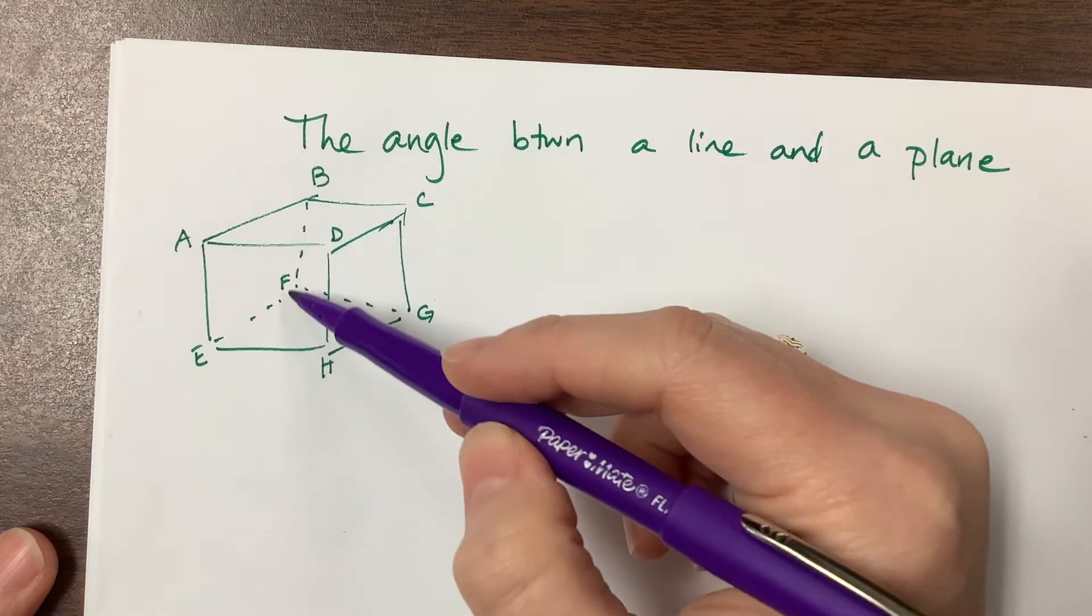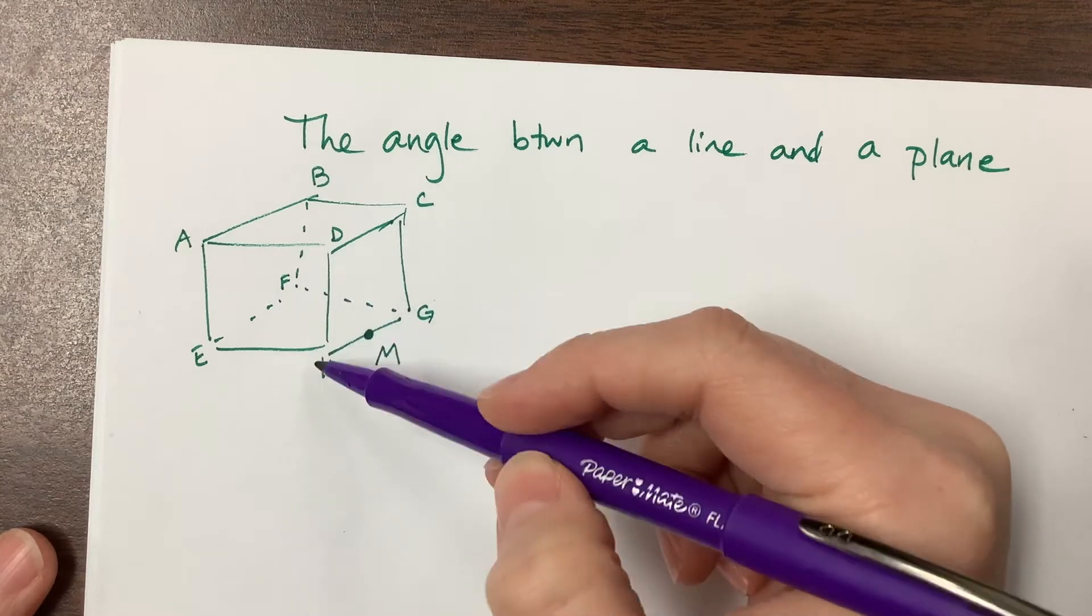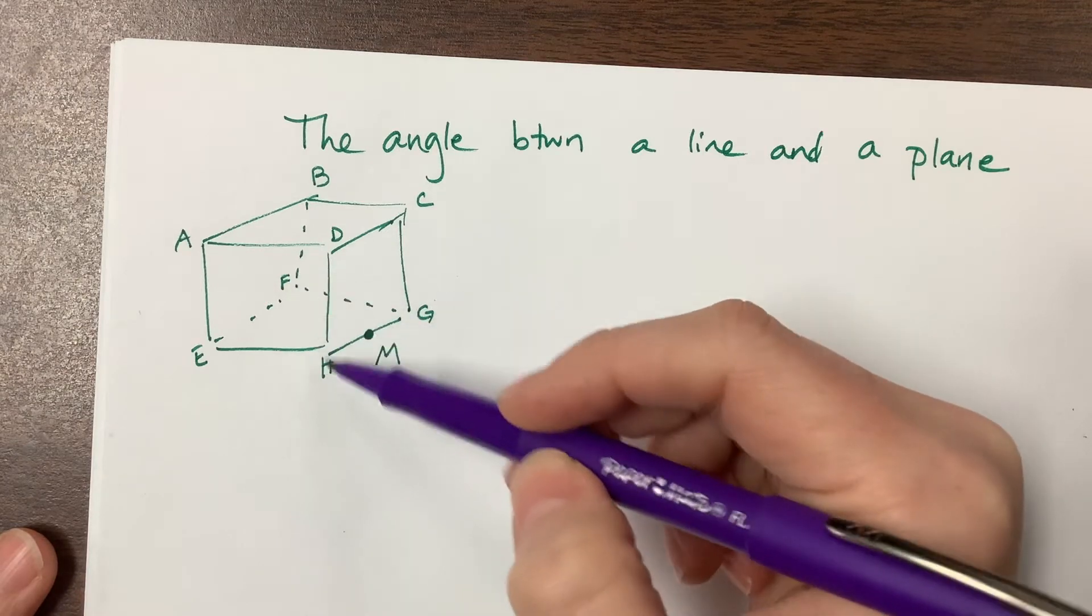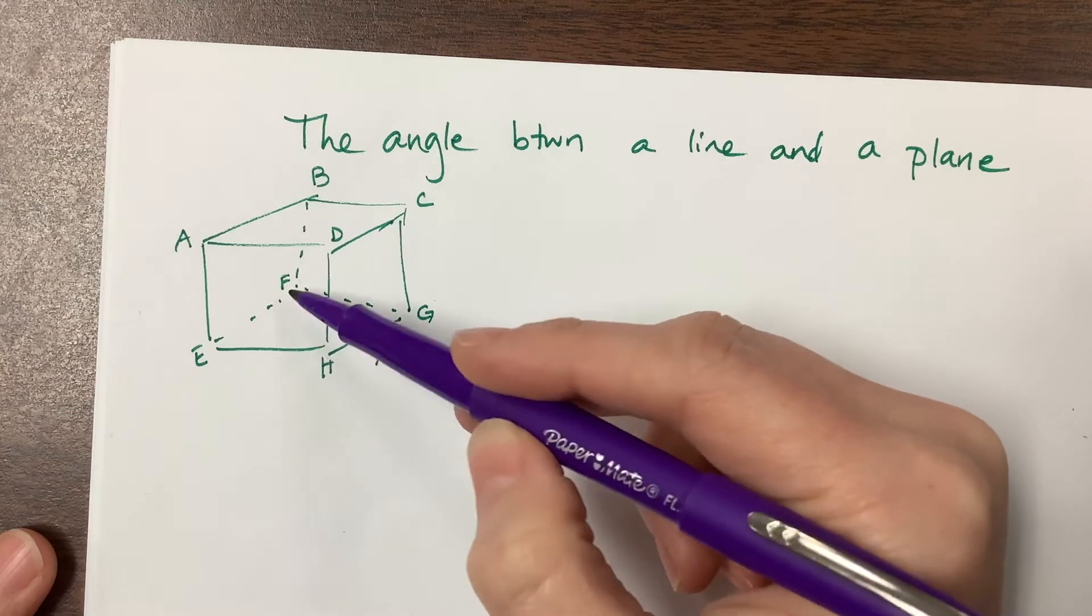Well, BHF is the angle they're talking about, the angle that's formed. The projection onto the plane is this FH right here, if we're talking about BH being projected down onto that plane.